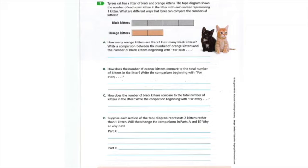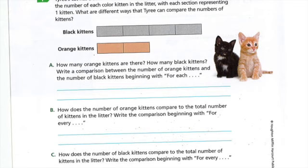Alright, let's look at the next page. This page says, Tyree's cat had a litter of black and orange kittens. The tape diagram shows the number of each color kitten in the litter. With each section representing one kitten. What are the different ways that Tyree can compare the numbers of kittens? So then A says, How many orange kittens are there? And how many black kittens? So, if we were to look at the tape diagram, how many orange kittens do you think there are? Correct. So, let me zoom in here. We are two orange. And how many black? Correct. Four black.